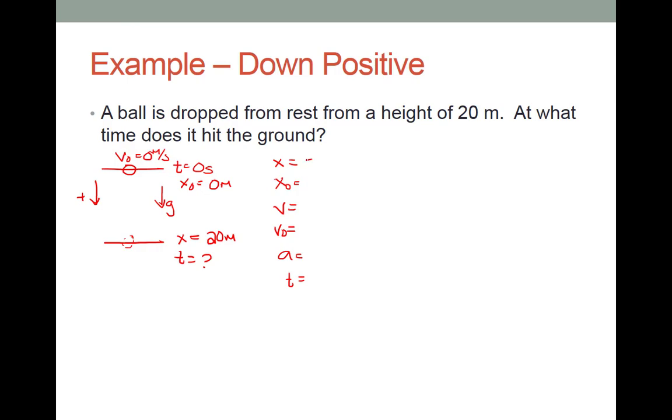So my final position in this case is a positive 20 meters. My initial position is 0 meters. That velocity I still don't know. Still not going to write anything in there. Initial velocity of, again, 0. Acceleration. My acceleration is downward. Positive is downward. So my acceleration is now positive 9.8 meters per second squared. And the t is, again, the thing I want to know.